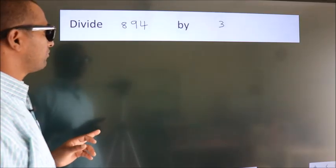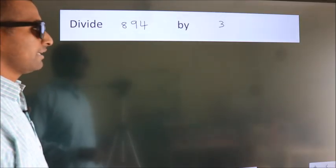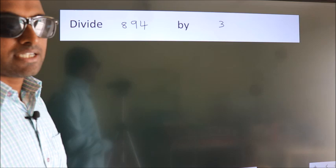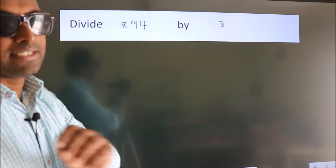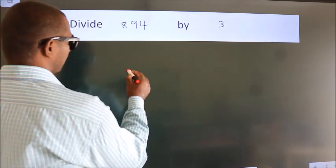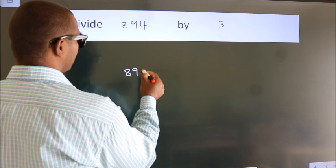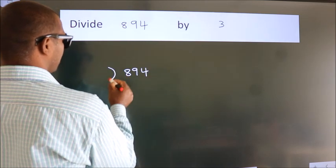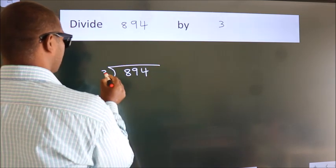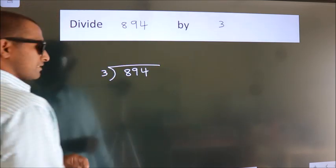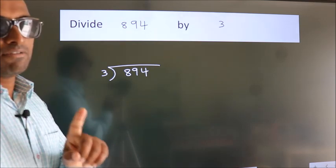Divide 894 by 3. To do this division, we should frame it in this way. 894 here, 3 here. This is your step 1.